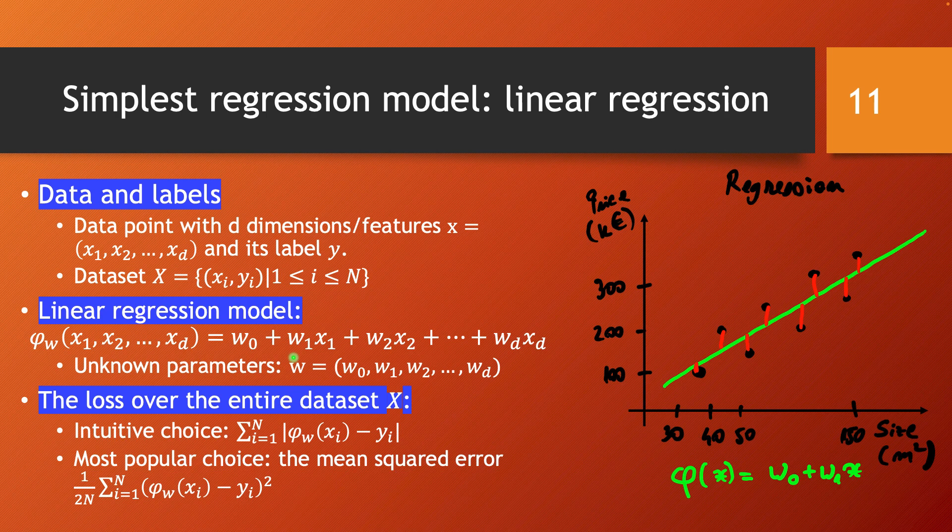The objective of learning or optimizing this model is minimizing the loss over this entire dataset we have. This was clearly intuitive in this example we've had—looking at all the differences between the predicted values and the real labels over the entire dataset. We need some way of quantifying these differences to give us this measure of loss, of how far the model is overall over the entire training dataset from the real labels.